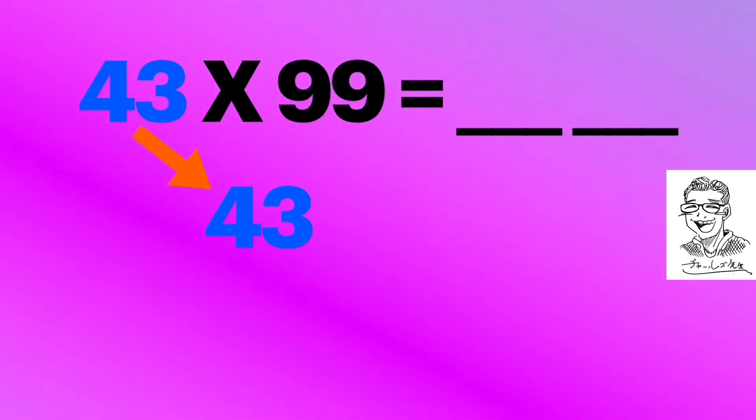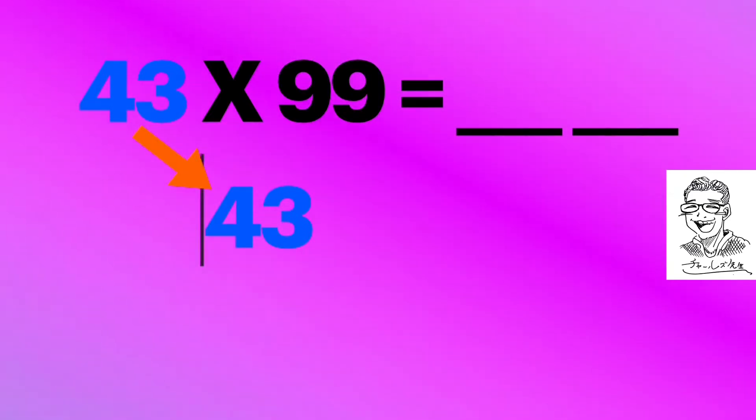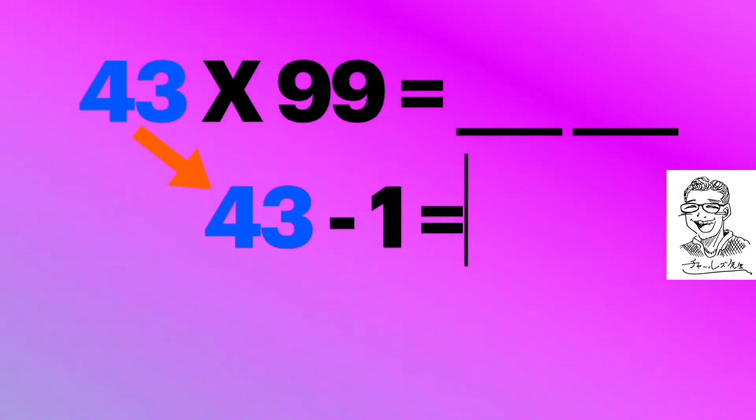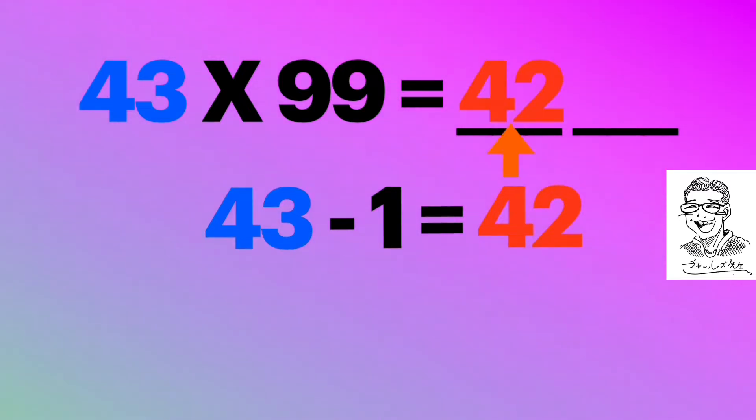So you are going to deduct 1 from 43. 43 minus 1 equals 42. And these are the first two digits of the answer.